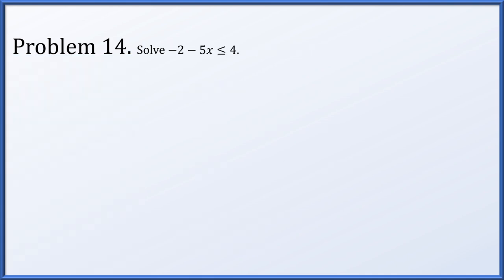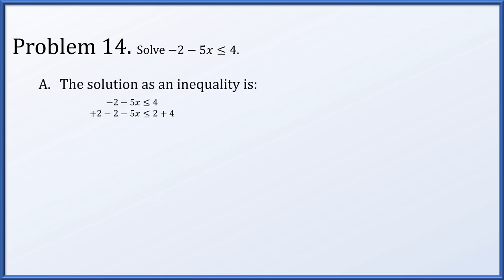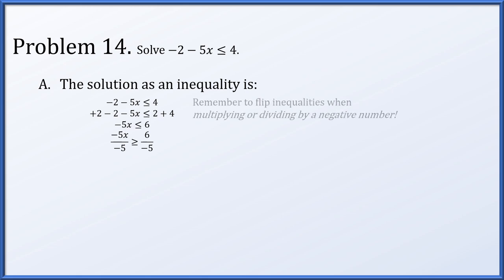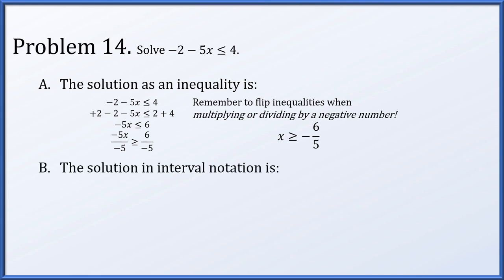In problem fourteen, solve negative 2 minus 5x is less than or equal to 4. Adding 2 to both sides gives negative 5x is less than or equal to 6. Dividing by negative 5 requires flipping the inequality, giving x is greater than or equal to negative 6 fifths. As an interval, this is the bracket negative 6 fifths, positive infinity with a closed bracket at negative 6 fifths and parenthesis at infinity.